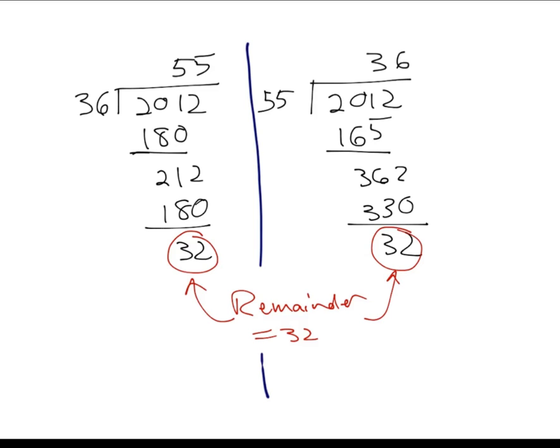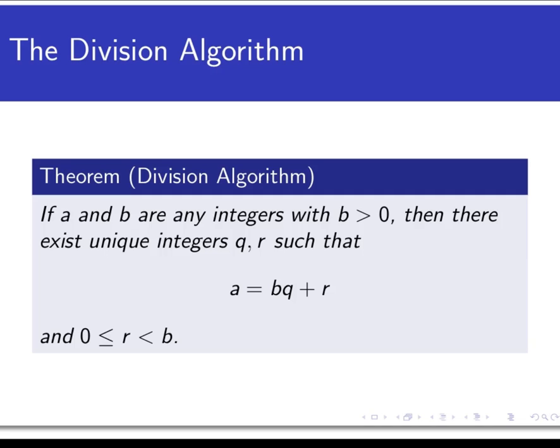So the long division process lets us phrase division results without using any division. Can we always do this for any two integers? The answer is basically yes, and that is the result known as the division algorithm. So the division algorithm states that if we take any two integers, A and B, with B bigger than 0, then there exist unique integers, Q and R, such that A is equal to B times Q plus R, and 0 is less than or equal to R is less than B. So this is a lot of information here.